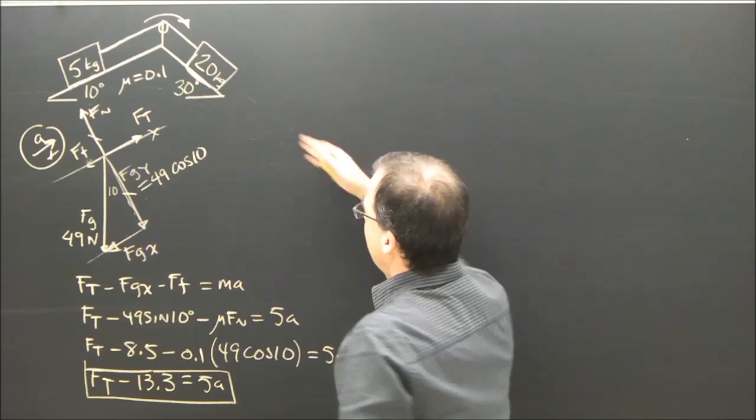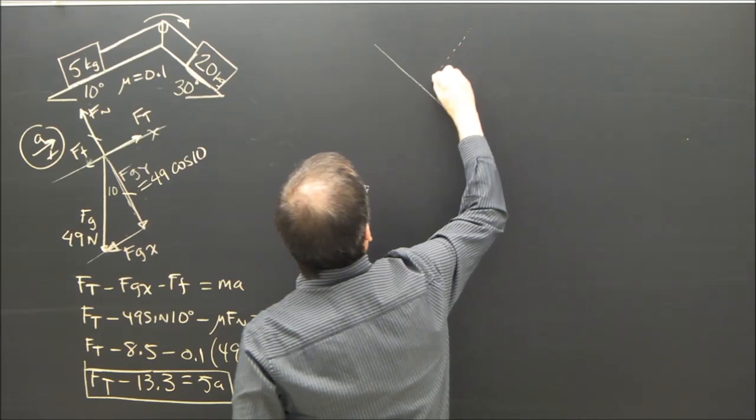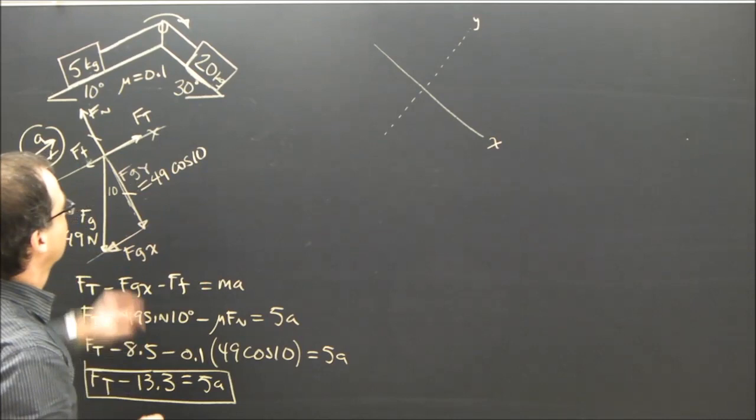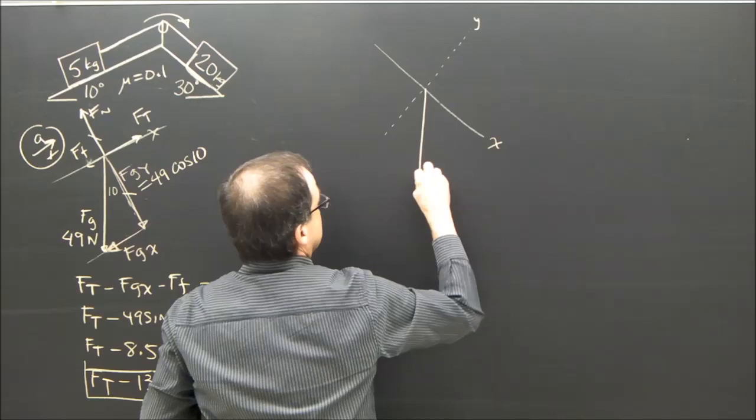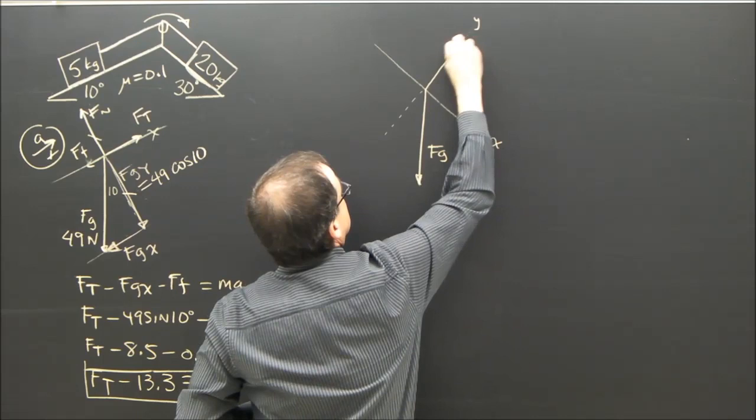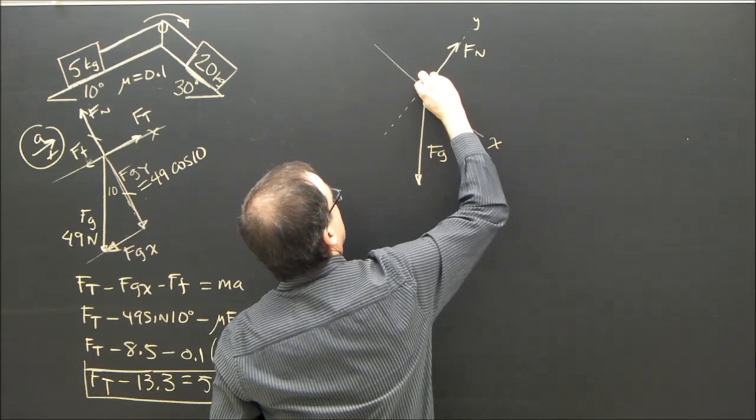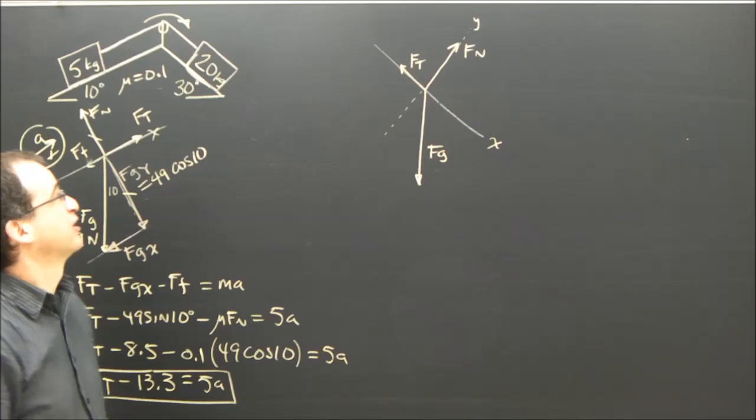Alright. I need a free body diagram of the 20. So I'm going to draw the surface like that. Make my y axis. This is my x axis. This is my y axis. And forget this diagram. I'm just drawing this. Is there gravity? There's gravity on it. Is it sitting on a surface? Yes, it is. Is there something pulling on it? Yup. There's a rope. Then there's a rope. There's tension.